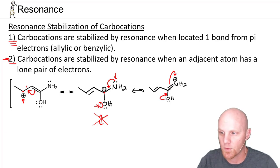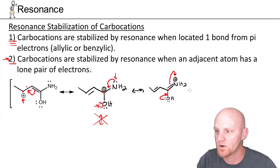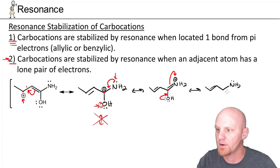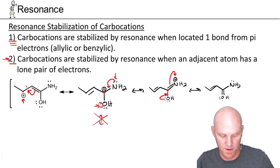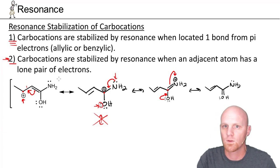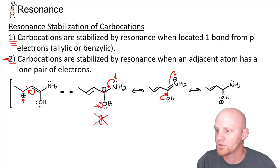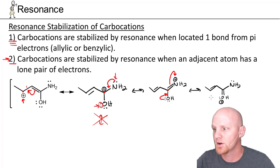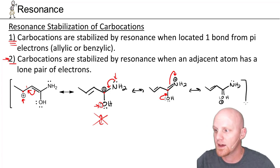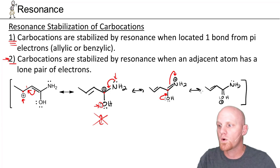The first arrow puts the lone pair back on nitrogen, giving us back a carbocation there, and then the second arrow moves the double bond to oxygen. In our last resonance structure, nitrogen has its lone pair back, we still have the original pi bond, and now we have a pi bond to oxygen. Working out oxygen's formal charge — six minus the bond count — gives it a plus one charge. So instead of a carbocation, we now have an oxygen cation. With no additional pi electrons or carbocations nearby, that's the last structure. In total we have four resonance structures.